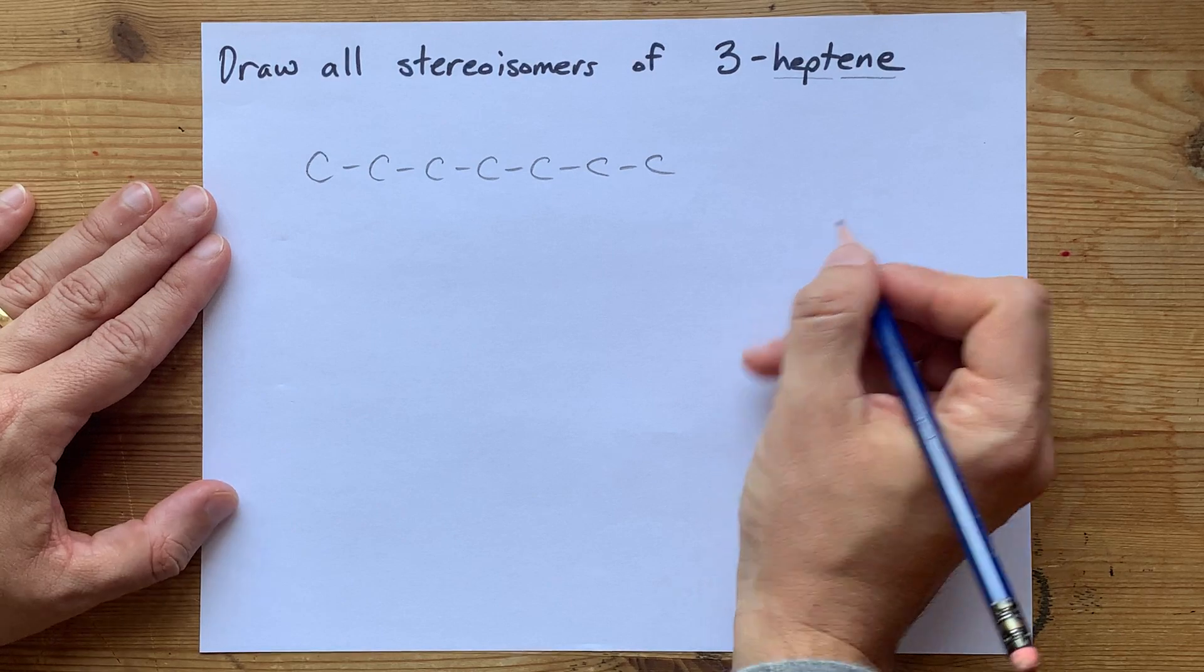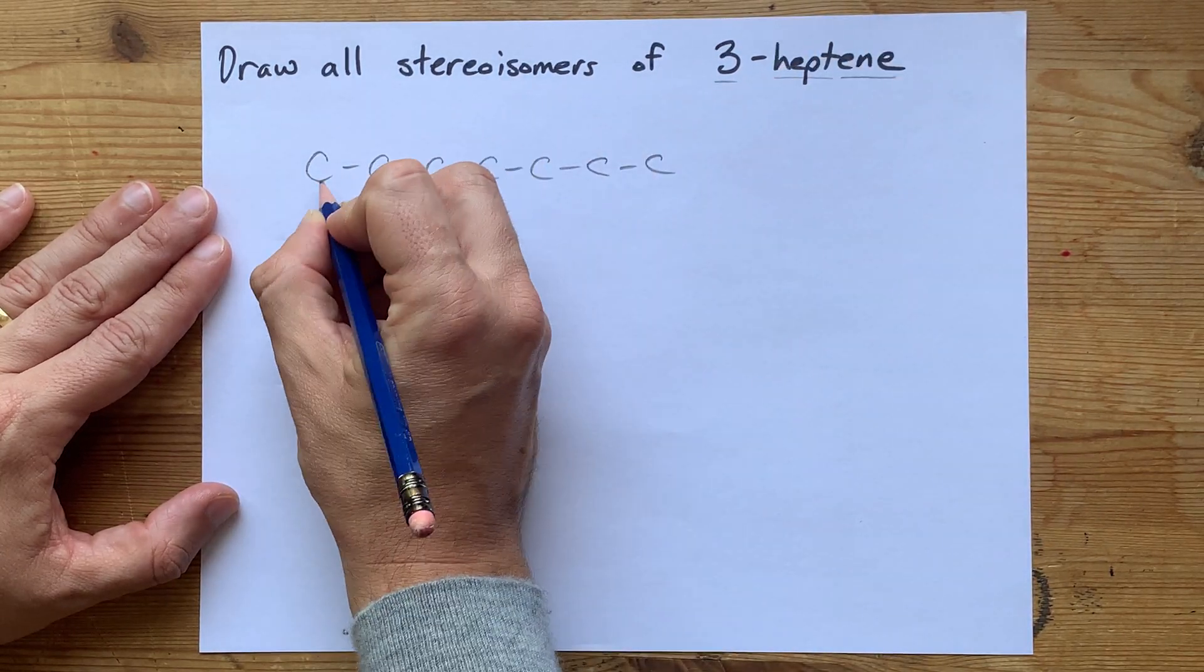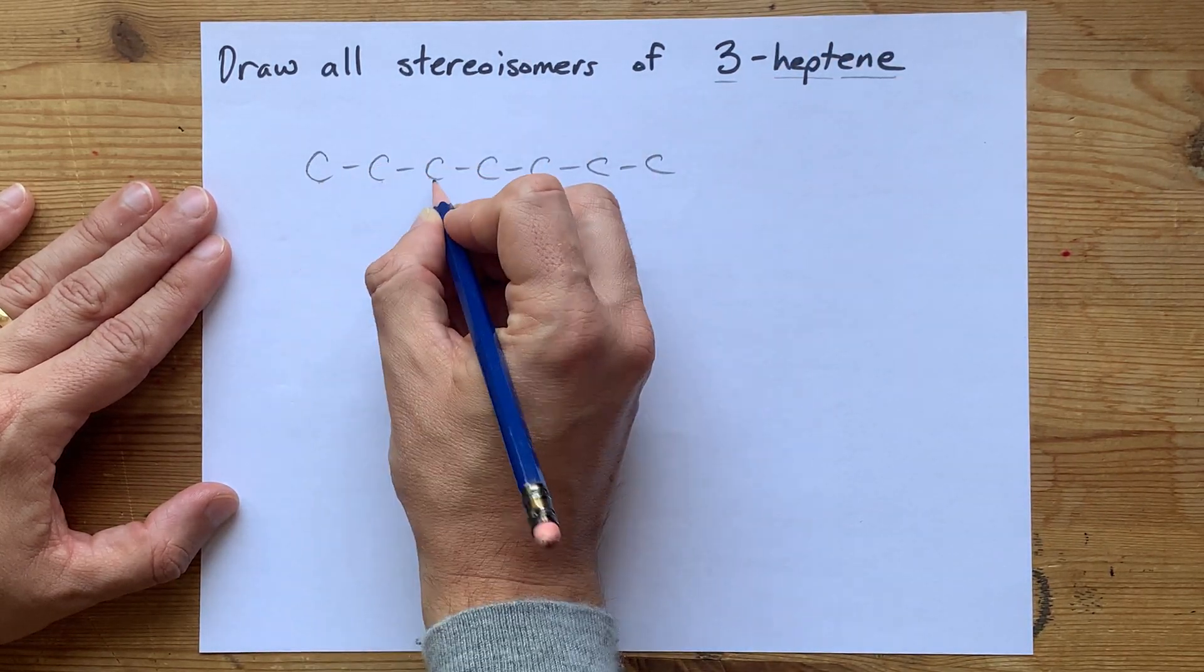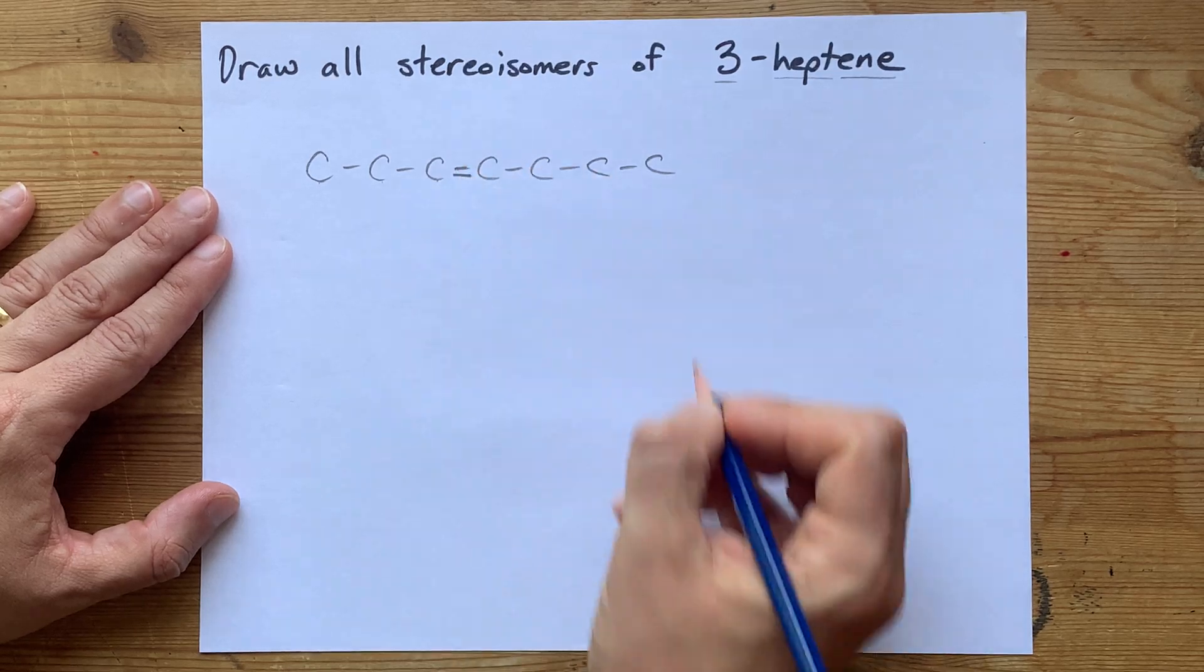En means there's a double bond, and the three tells you where it starts. This is carbon one, two, and three, so that's my double bond.